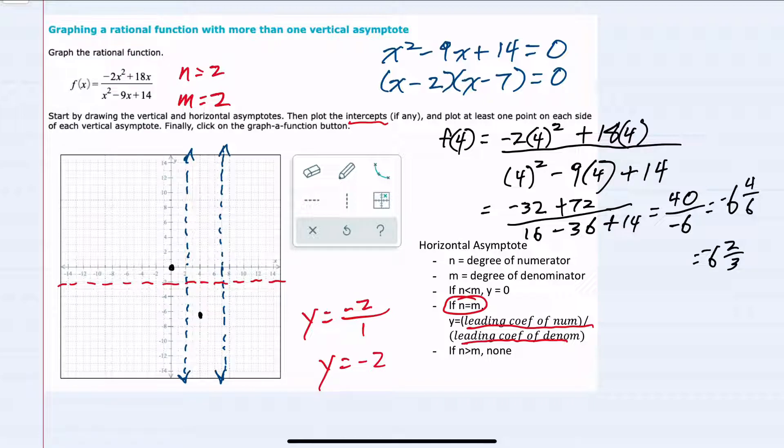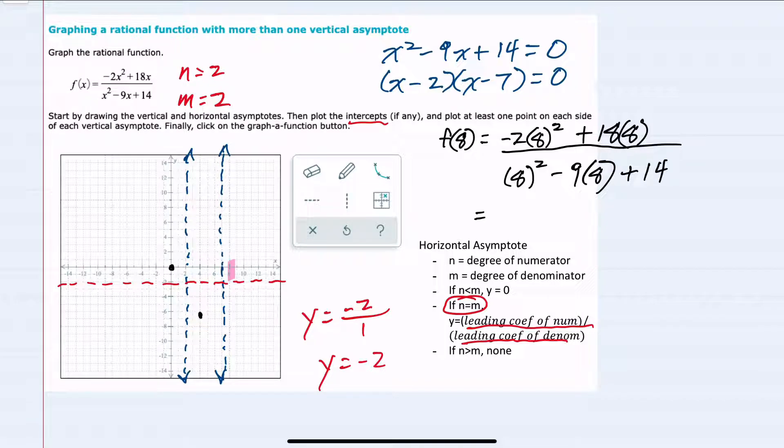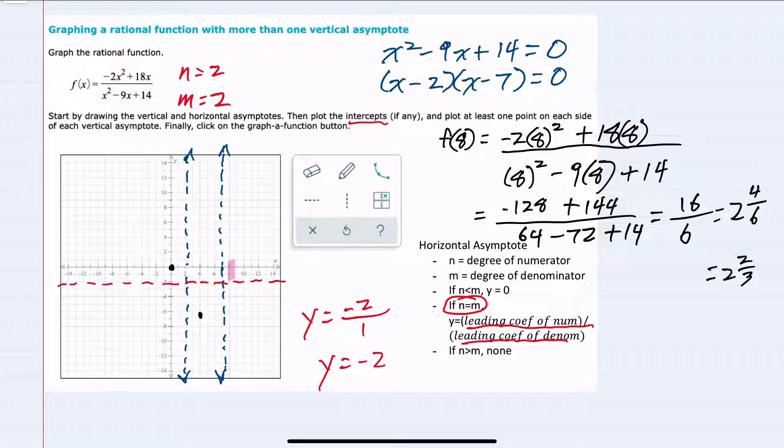And then one more point on the right of that rightmost asymptote. I can plug in a positive 8. Replacing x with 8 gives us negative 2 times 64 or negative 128 plus 18 times 8 equals 144. In the denominator, 8 squared is 64 minus 9 times 8 is 72 plus 14. Our numerator is a positive 16 and my denominator is a positive 6. So a positive 2 and 4/6 or 2 and 2/3. When x equals 8, y is 2 and 2/3.